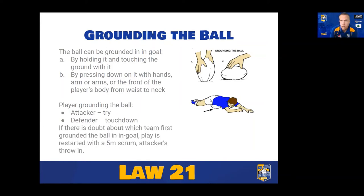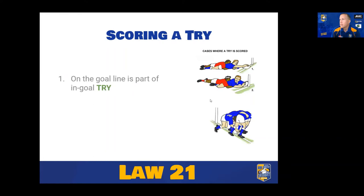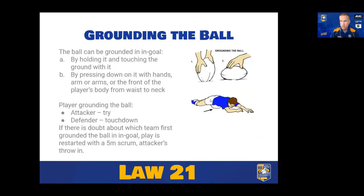If there is doubt about who actually grounded the ball first, play is always restarted with a five-metre scrum to the attacking team. That old saying of 'benefit of the doubt' is a fairly good mantra for a referee — you can't make things up. If you don't know, you can't rule on it; you can't rule on what might have been. If you haven't seen a grounding first by the attacking team, you can't award a try, even if they actually did score one. That's the approach referees need to take in the in-goal.